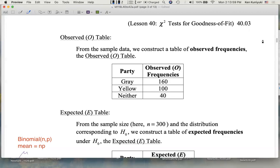So basically, in a problem that I give you, I would give you the information to immediately fill out the O table. But you now have to figure out the E table, the table of expected values.